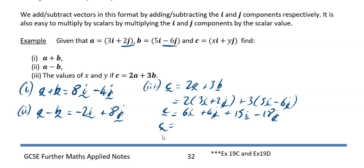The i parts, 6i plus 15i is 21i, and 4j minus 18j is minus 14j. So x equals 21 and y equals minus 14. That was us done for this video.